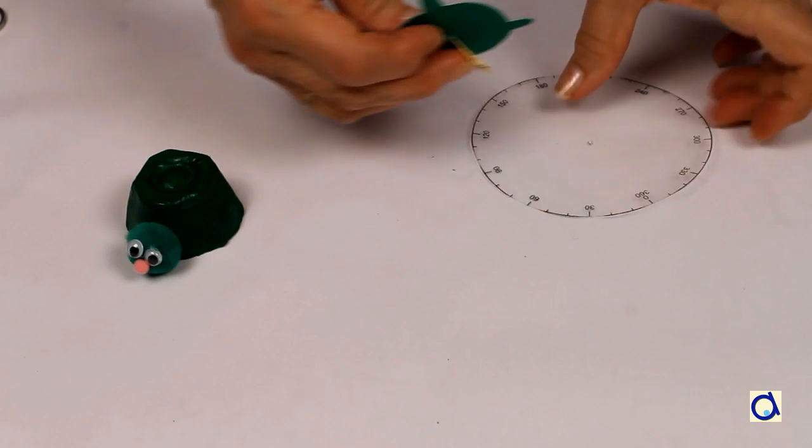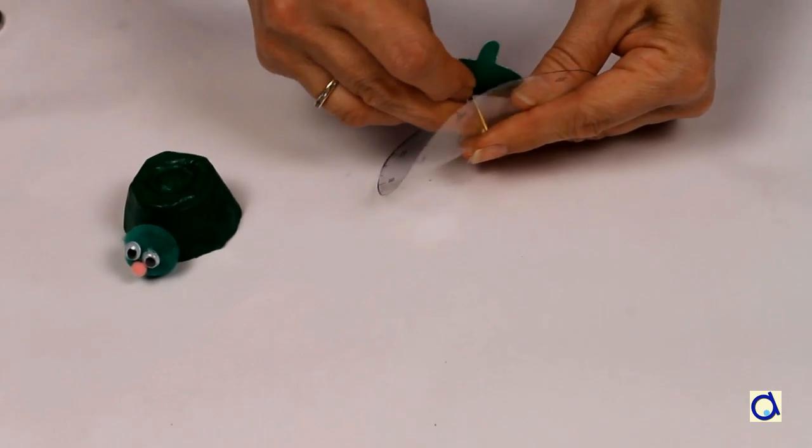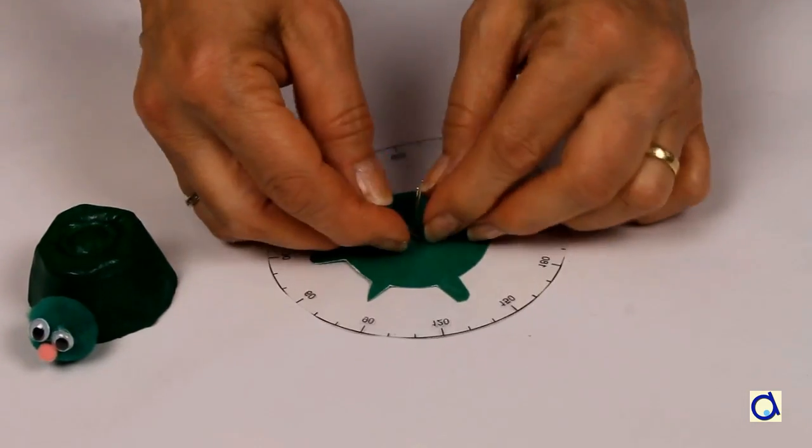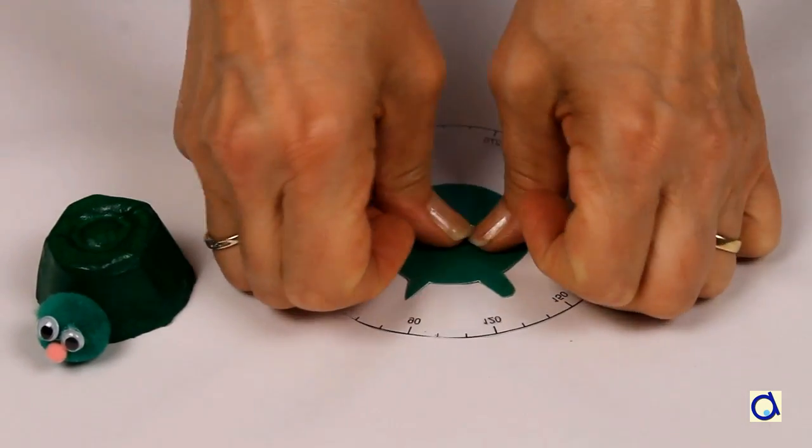Take a brass fastener and pass the tips of the brass fastener through the center of the construction paper base and then through the center of the protractor. Turn the whole thing around and spread the legs of the brass fastener on the side of the protractor.